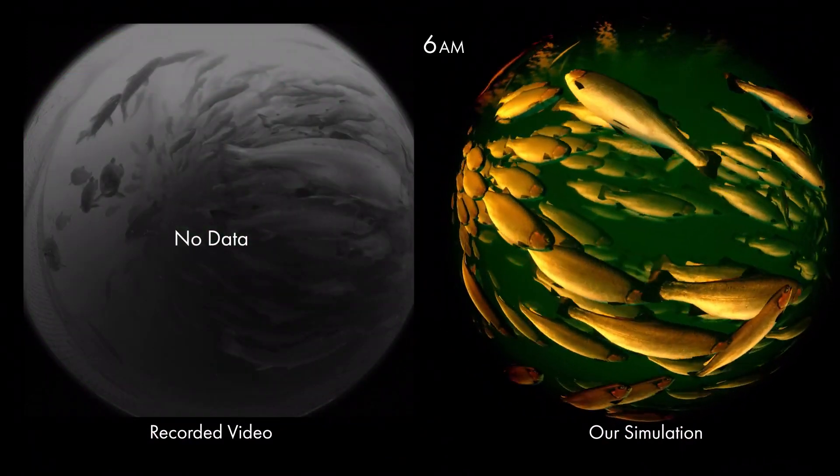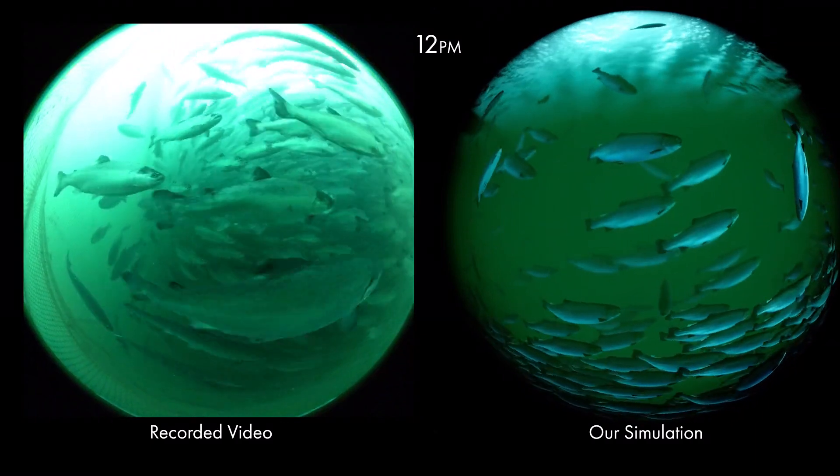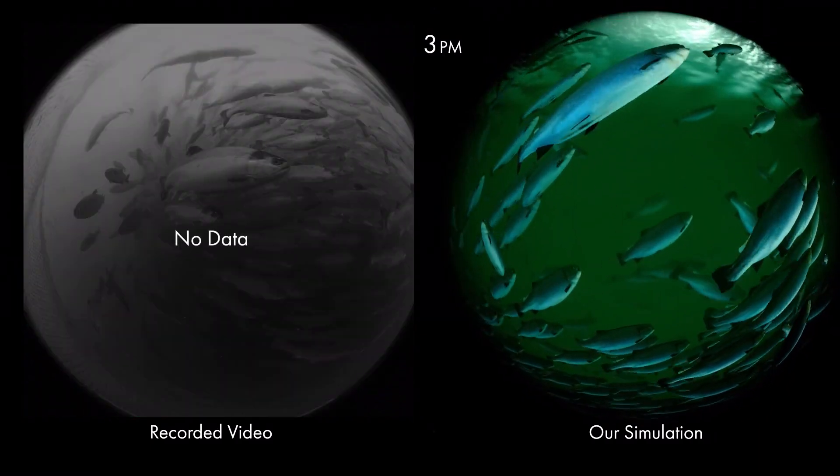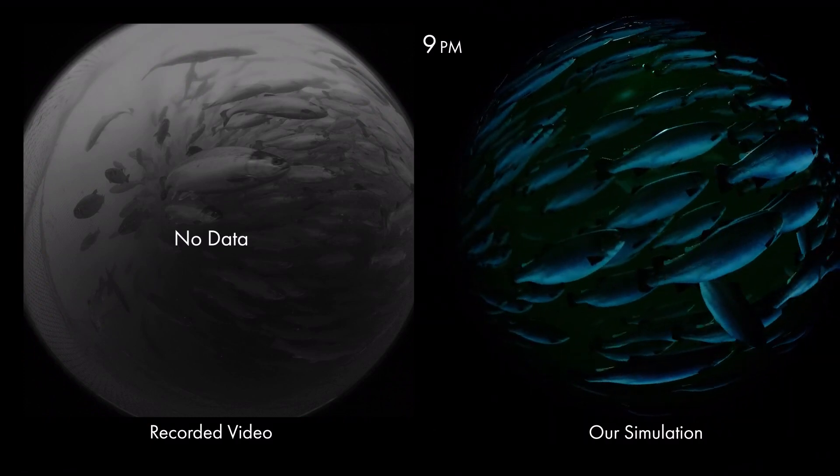The video data we recorded was taken from around 11 a.m. to 12 p.m. By using our proposed method by reproducing the light from the sun based on its position in the sky over time, it is possible to generate data with our simulation that is not in the recorded data.